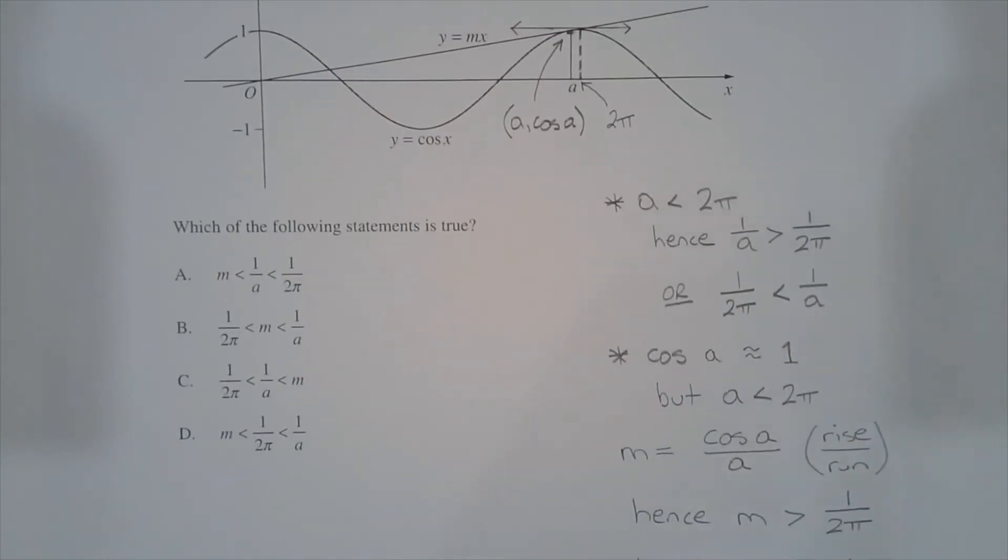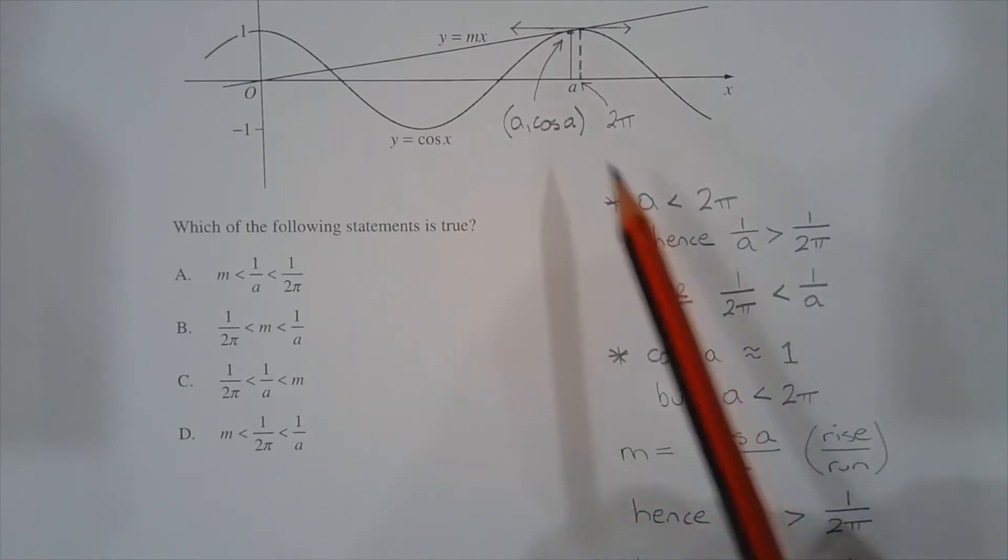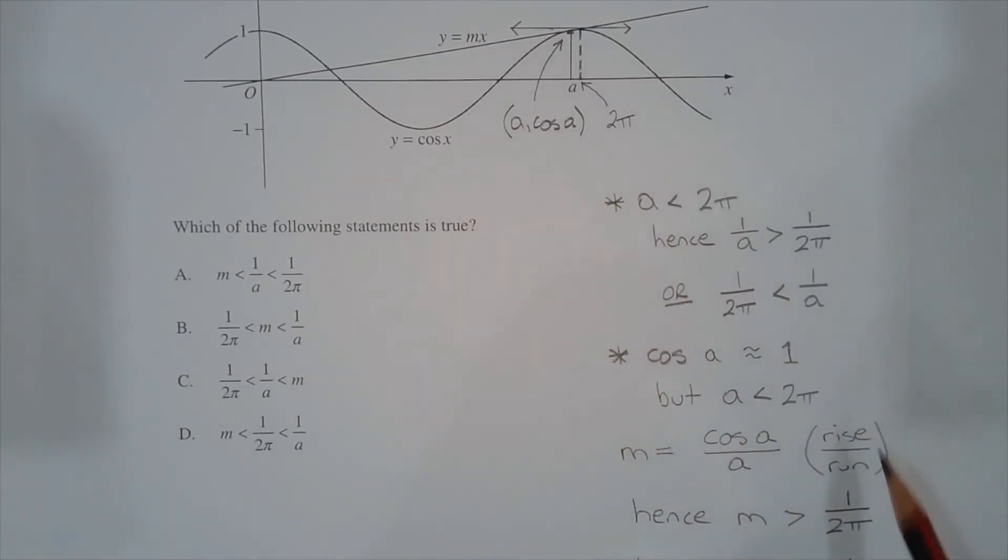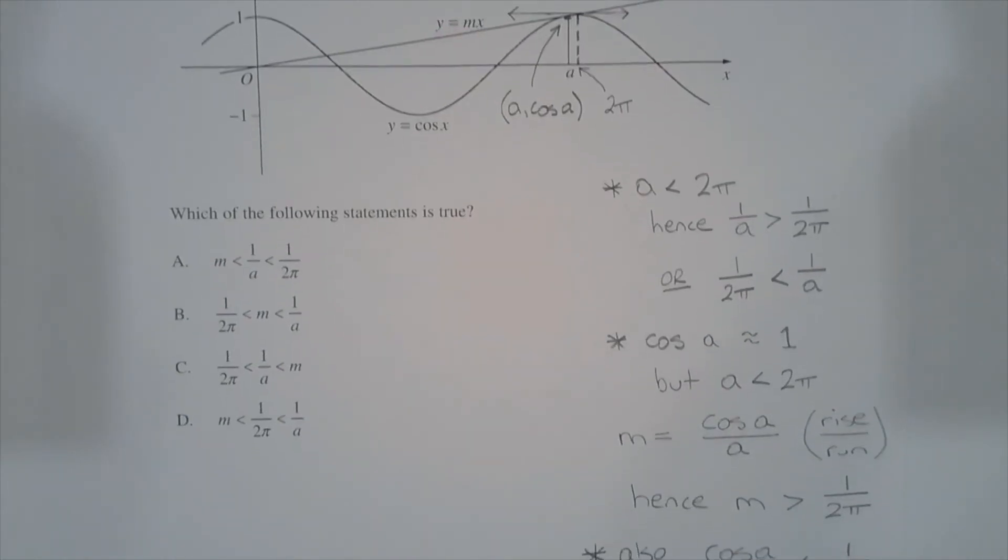The next point to consider is that cos of a is approximately equal to 1, but a is less than 2π. Now the gradient m is equal to cos of a over a, so that's the y coordinate over the x coordinate, rise over run. Hence, m is greater than 1 over 2π.